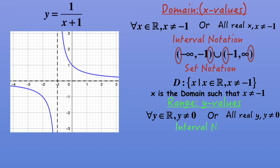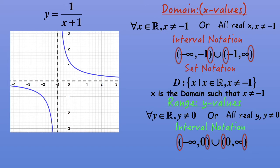Now we have to do that in interval notation. The same way we did in domain, we have to split it up into two different sections — that means we need to have that union in the middle. We do the bottom half and the top half: from minus infinity to zero, union together with zero to infinity. And of course, they're all round brackets because we don't want to include any of the values. And in set notation: R colon curly bracket, y such that y can't equal zero.